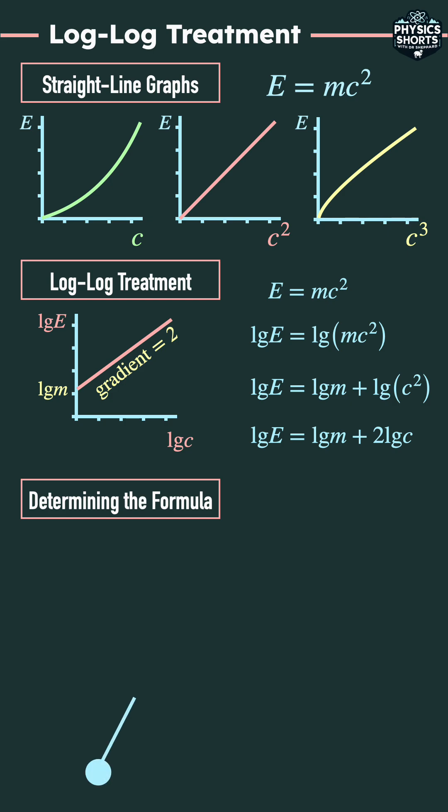Imagine we did an experiment with a pendulum and investigated how the time period T varied with changing pendulum length L. We get some results and instead of plotting T against L, we plot log T against log L. We find the graph is a straight line and it doesn't go through the origin.